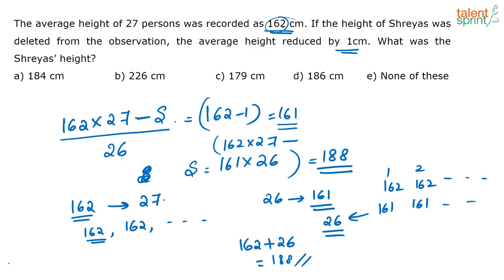I'll explain it once again. Average height of the 27 students is 162, so the average height of each student is 162. When I remove Shreya's height, the average height of each student becomes 161. So from each student, one point of height is being reduced. Totally that accounts to 26. I also know the average height of Shreya earlier was 162. So her actual height is 162 + 26 = 188.